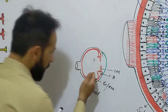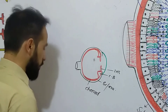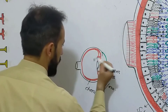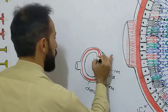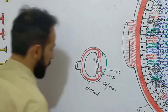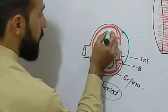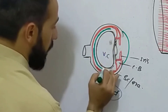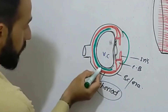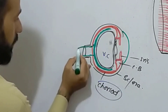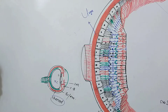Inner to the choroid there is another layer of the eye called the retina. Here is your lens with the suspensory ligaments, and here is a chamber called the vitreous chamber. Between the vitreous chamber and choroid there is the third layer of your eye — the layer on which image formation occurs — and this is called your retina. The fibers from the retina leave the eye through the optic disc and optic canal and go to your central nervous system.